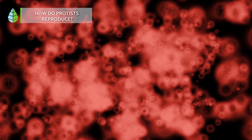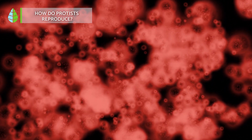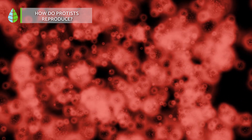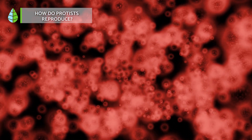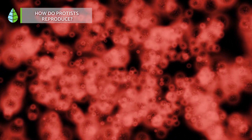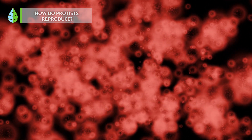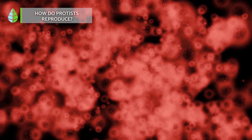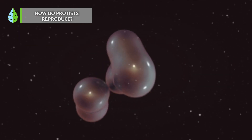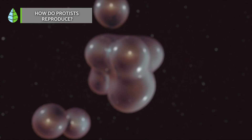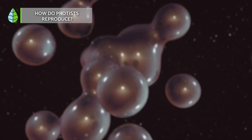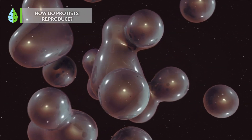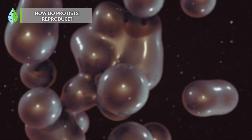How do Protists reproduce? Protists utilize both sexual and asexual reproduction strategies. Sexually, they undergo mitotic and meiotic processes. Asexually, they reproduce via mitosis, bipartition, budding, or multiple division.